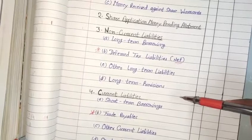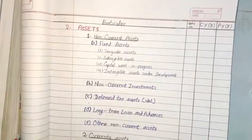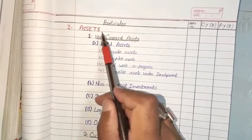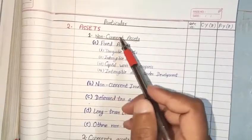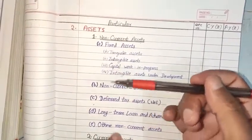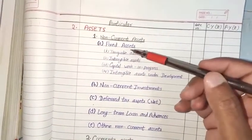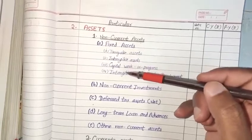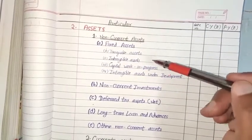This is the asset side. Assets is the main-main heading. Now I am going to explain all the points in Hindi because I want most of the students to get the benefit — each and every student will get the benefit. I don't want a single student to lose this lecture.